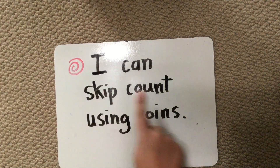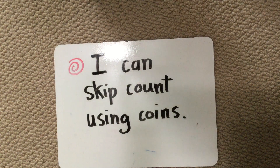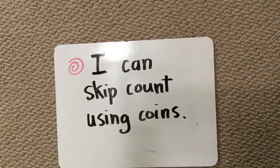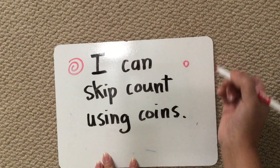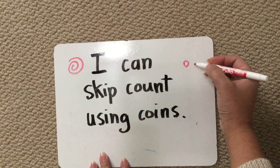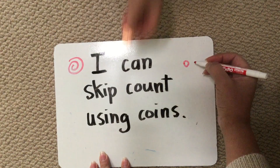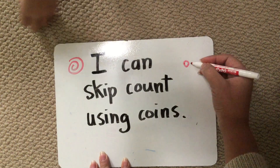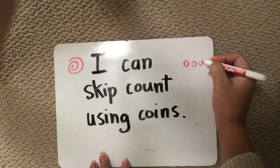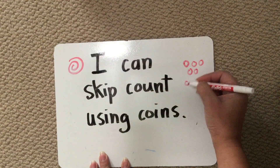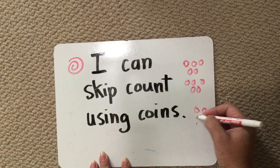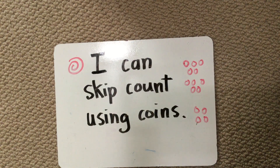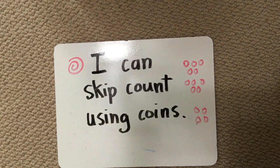We know that with skip counting you can count in many different ways. Often we count by one — that's one at a time. But sometimes we might want to count in faster ways, by counting in groups of five, or groups of ten, or even in groups of two. Today I'm going to show you some ways that you can use coins to skip count.